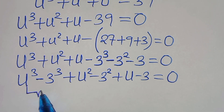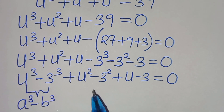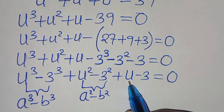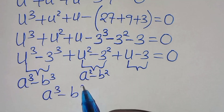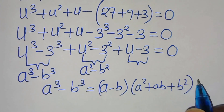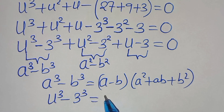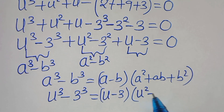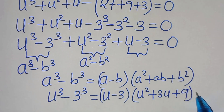We have 3 parts here. The first part is the difference of two cubes expressed as a to the power of 3 minus b to the power of 3. The second part is the difference of two perfect squares, that is a squared minus b squared, and we have the third part. From the first part, a³ minus b³ equals (a minus b)(a² plus ab plus b²), and this implies that u³ minus 3³ equals (u minus 3)(u² plus 3u plus 9). Let's call this equation 1.